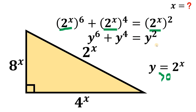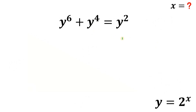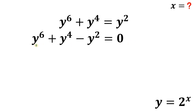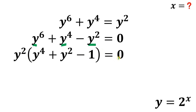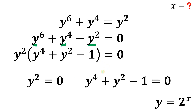We equate this to 0 and factor out the common factor y squared. Using the zero product property, we get y squared equals 0, or y squared minus 1 equals 0. Since y is greater than 0, y squared is also greater than 0, so y squared equals 0 is not possible. We focus on the equation y squared minus 1 equals 0.